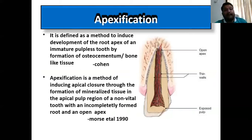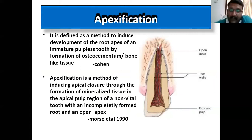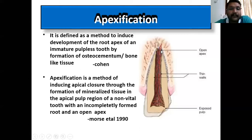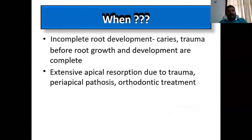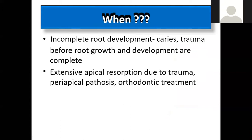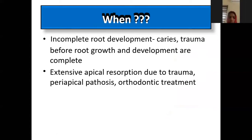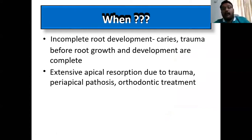In apexification, the apex is open, so you place some material trying to close the apex either by a bone-like material or formation of cementum. Apexification has to be done for an open apex with incomplete root development — it can be due to pulp exposure, carious exposure, trauma, excessive apical resorption due to trauma, apical pathosis, or orthodontic treatment.